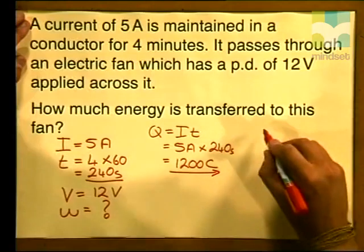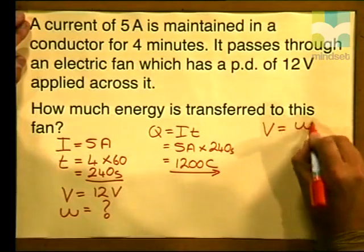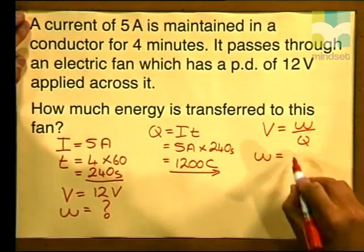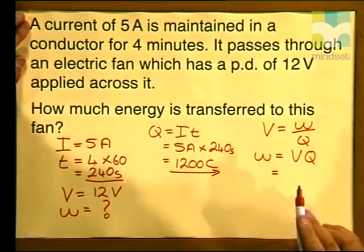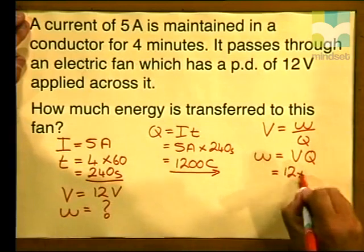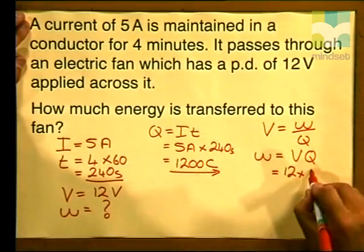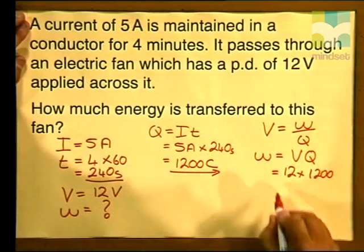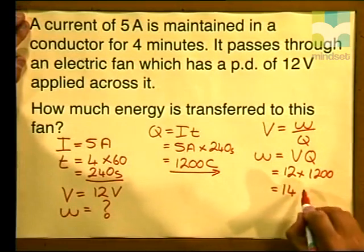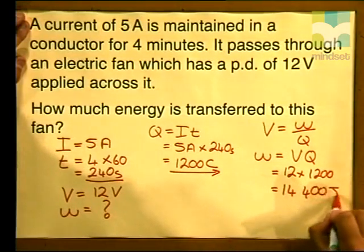Now that we've calculated Q, the amount of charge, it's a simple process to calculate the amount of energy transferred. Writing down V equals W over Q and making W the subject: W equals V times Q. Substituting in, V equals 12 volts and Q equals 1200 coulombs. 12 multiplied by 1200 gives us an answer of 14,400 joules.